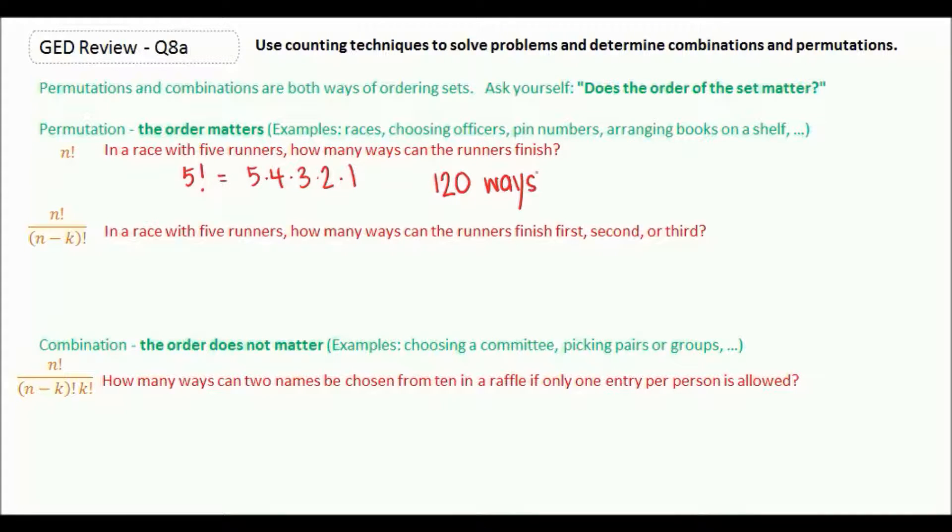Now we're going to have a similar question, but in this case we only care about first, second, and third place. It says in a race with five runners, how many ways can the runners finish first, second, or third?